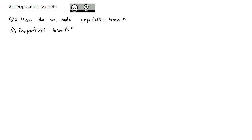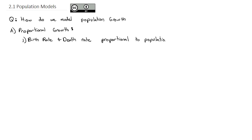You've actually seen proportional growth before — this differential equation — all the way back as far as Math 99; you just didn't know you were actually looking at this differential equation. If it turns out that the birth rate and death rate of a population is proportional to the population, that seems to make sense: the more people there are, the more people that will be born and the more people that will die. If you've got a population of just 10, there's not going to be as many births and deaths as if you had a population of a million. So it makes sense to say that they're proportional.